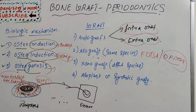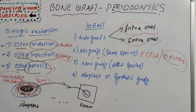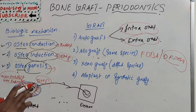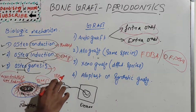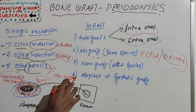Bone graft materials help maintain space to facilitate the formation of bone within a confined area. They should facilitate the growth of neovascularization and migration of osteoprogenitor cells. The size of bone graft particles determines the resultant space available for osseous formation; the typical particle size ranges from 100 to 1000 micrometers, which is conductive to in-growth of bone.